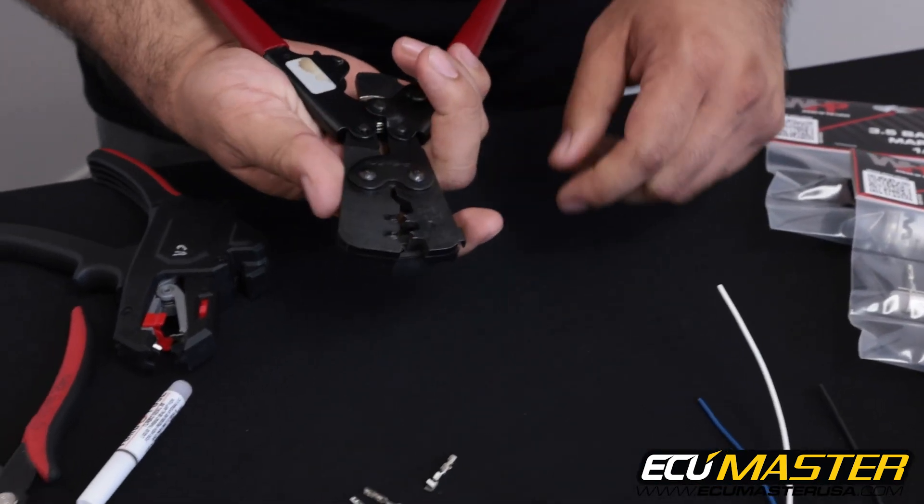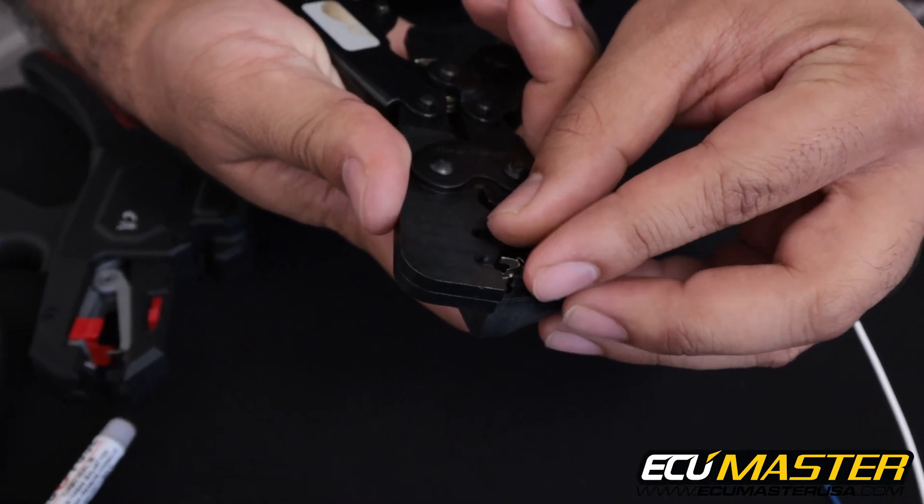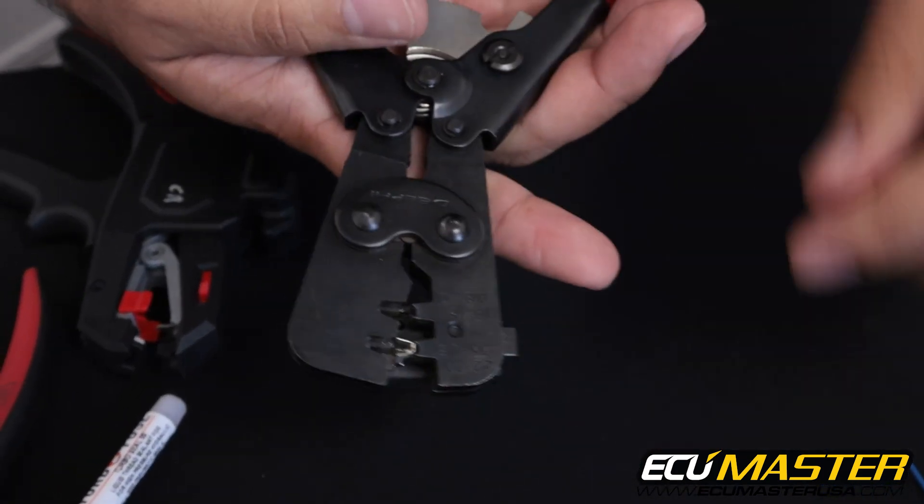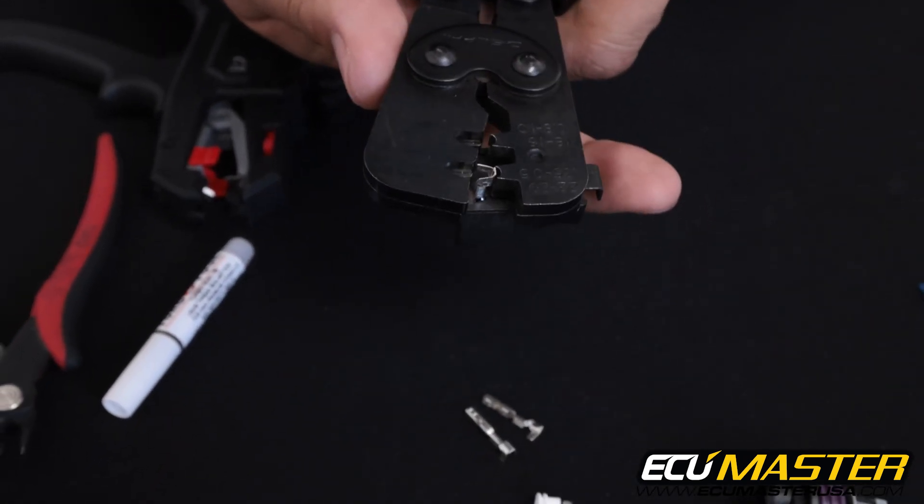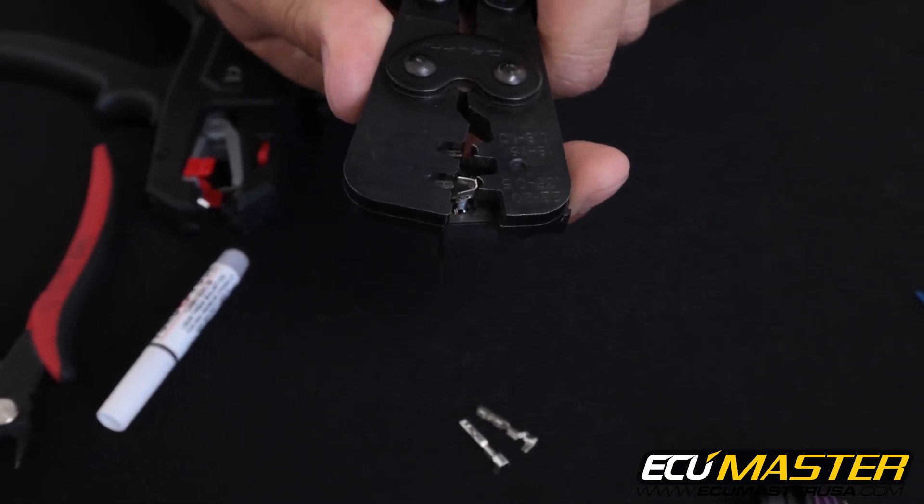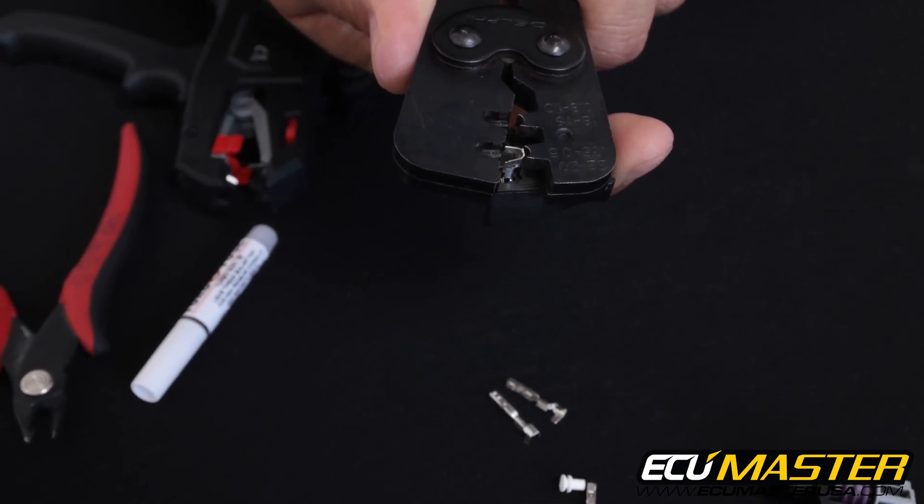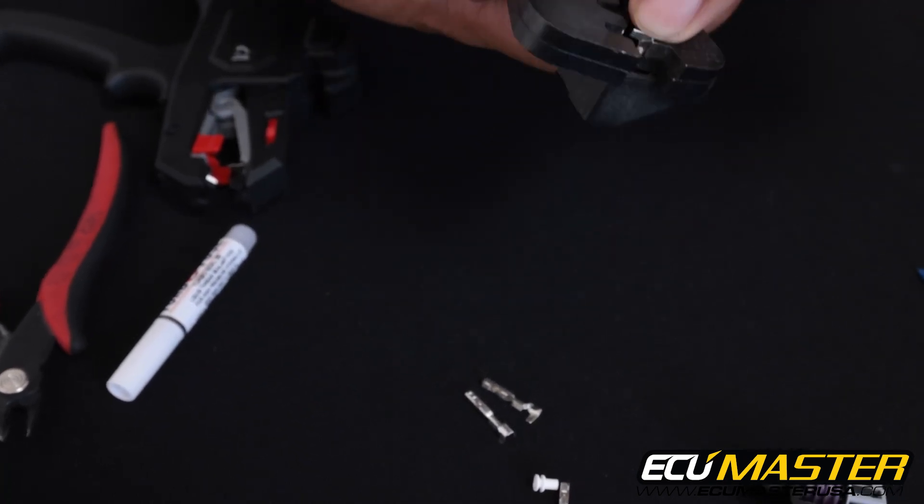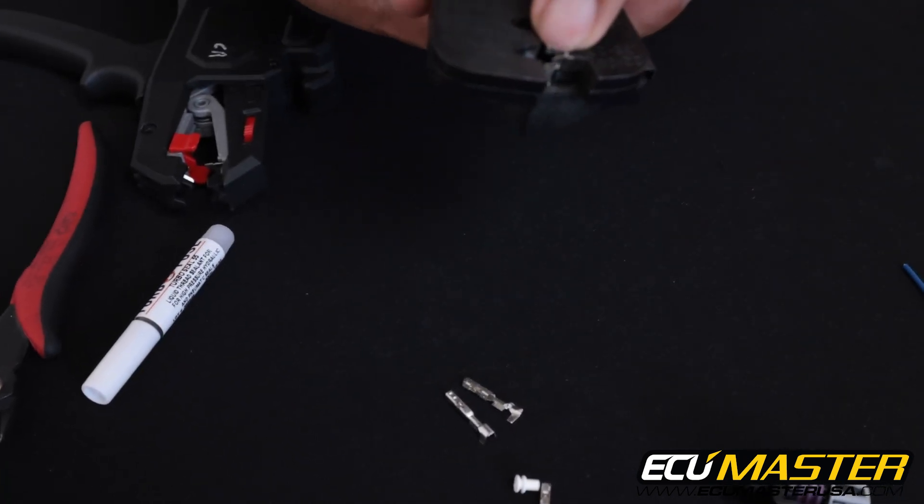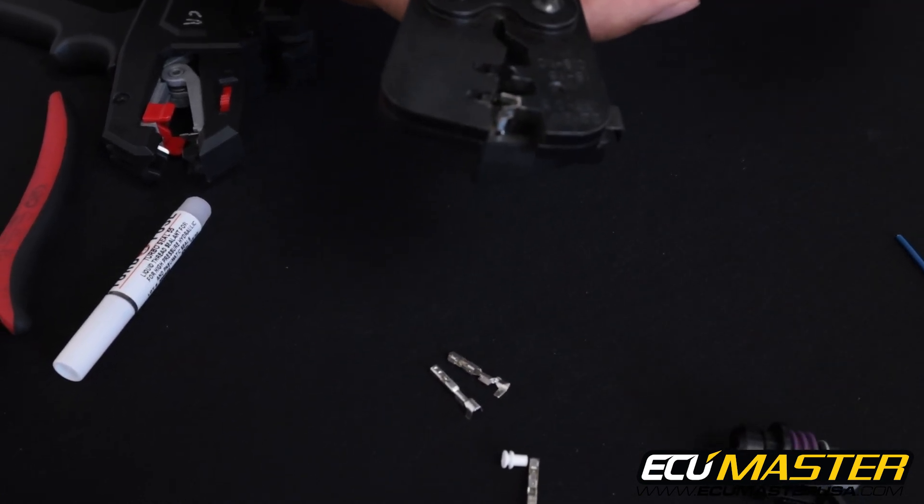Let's take our crimp frame and load a terminal in and get it ready to crimp the conductor into. You'll notice that this crimp frame has an automatic positioner here with a gate that's spring loaded, so as you insert the terminal you push on the gate, opens the gate, closes on the terminal, and now it's positively located inside of the crimp frame so it can't rotate around or give you any funny business as you go to crimp this on.